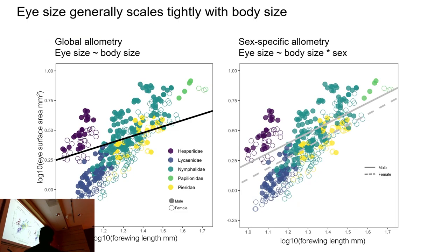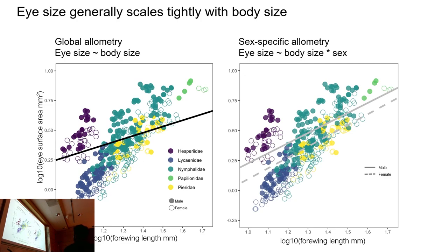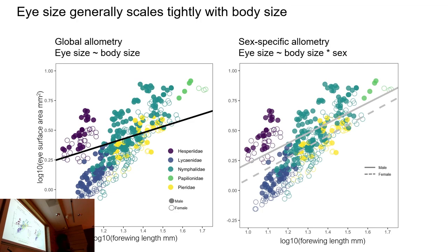Just very generally — you see a strong geometric relationship, which is not very surprising. There's one group which sticks out a bit: these are called skippers, and they have these moth-like eyes rather than butterfly-like eyes, so I call them physiological outliers. You can also see it's sex-specific — males usually have larger eyes compared to females. Again, not very surprising, and this we knew before. But I think this is, at least in insects, trying to use 3D across a broad macroevolutionary scale to capture broad-scale patterns.